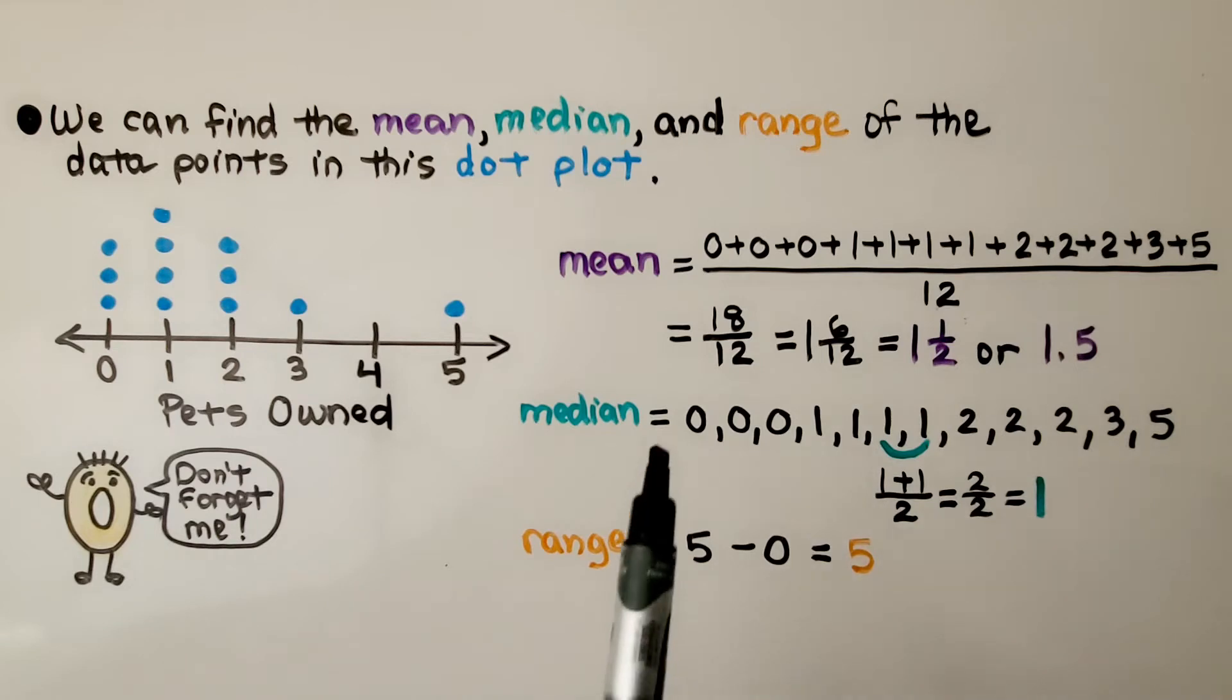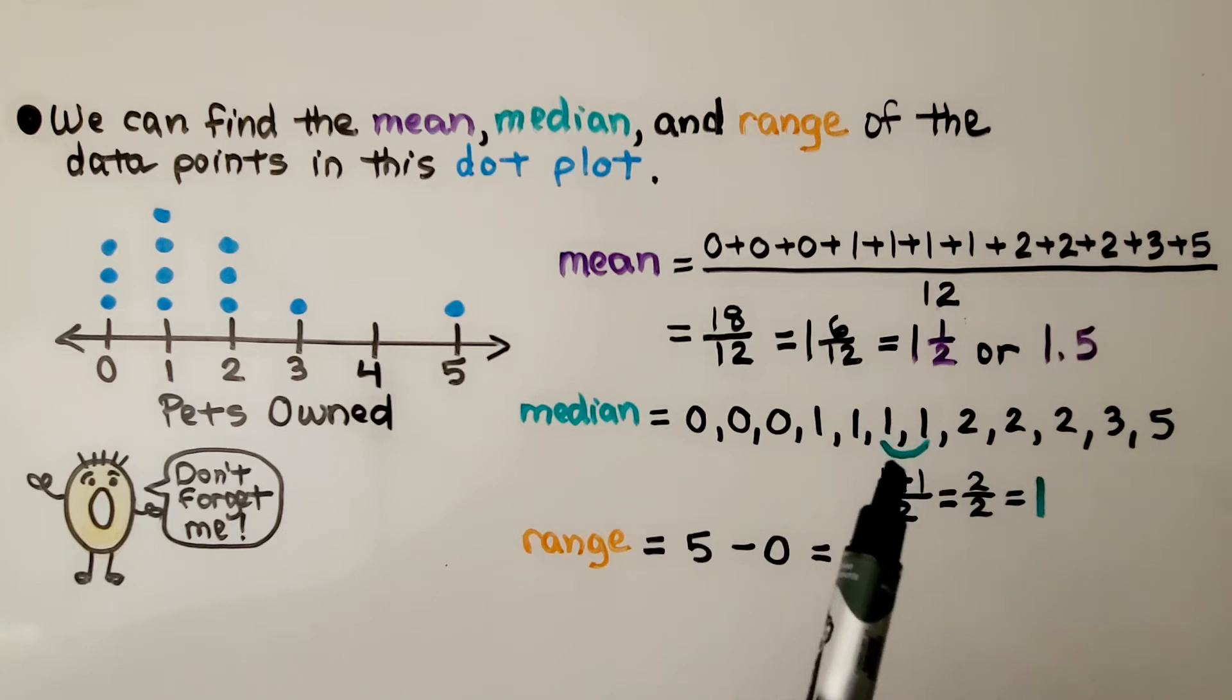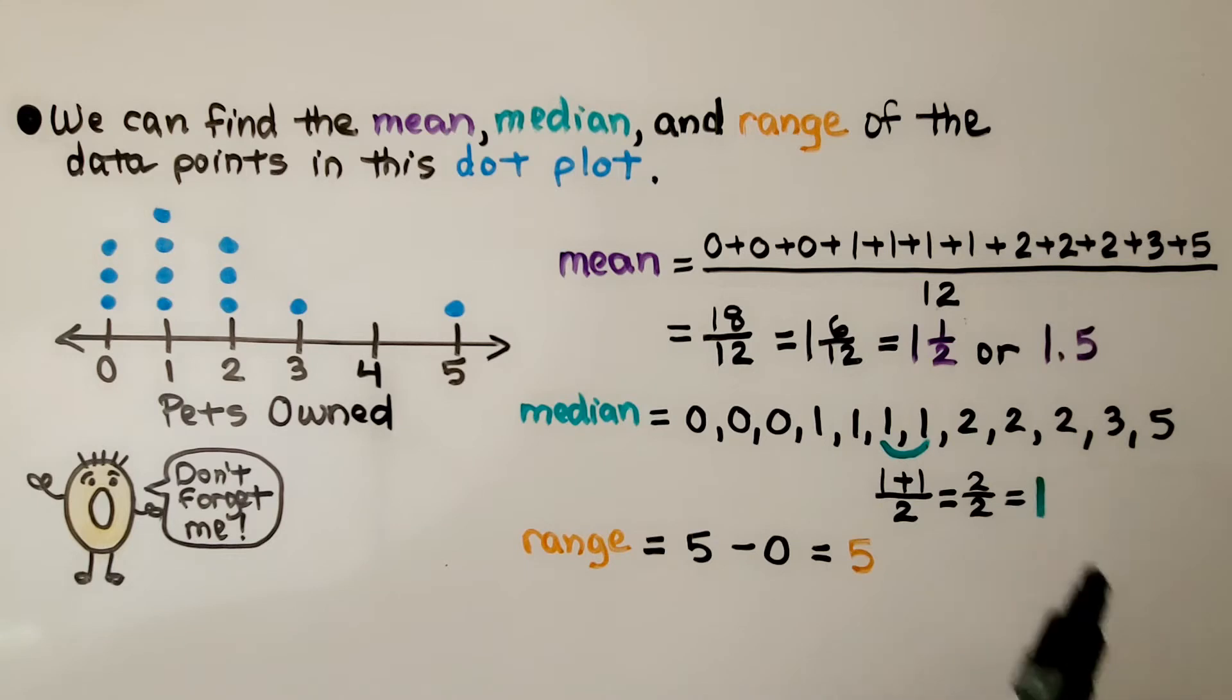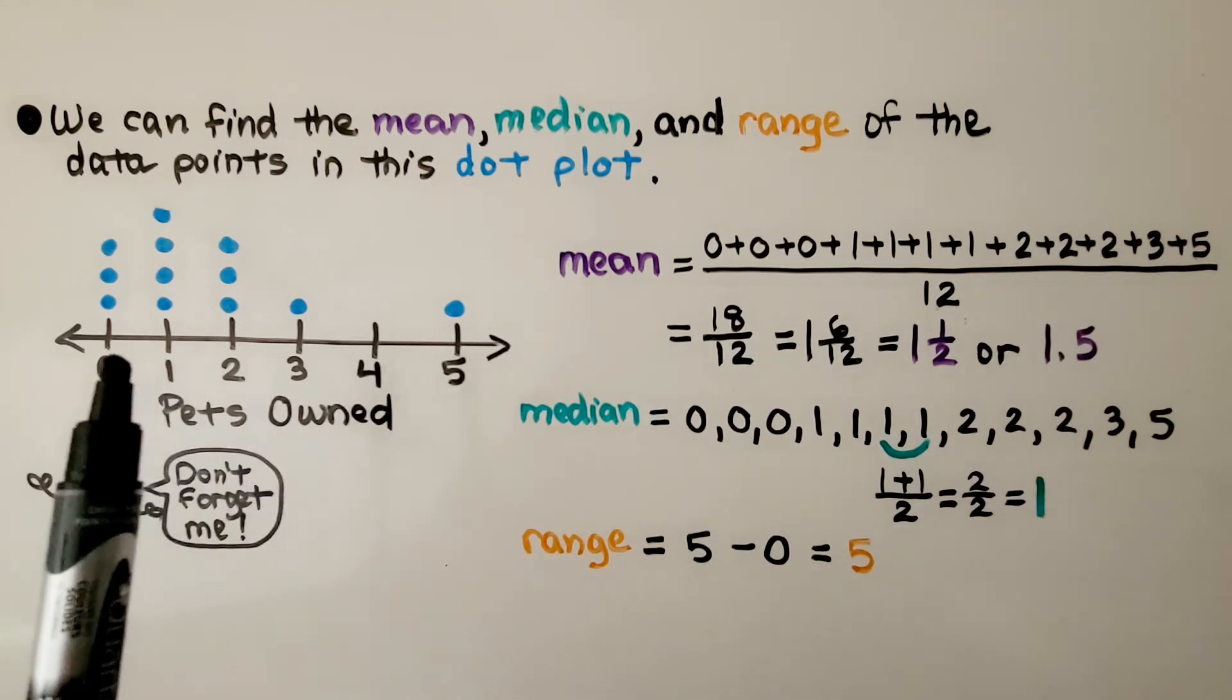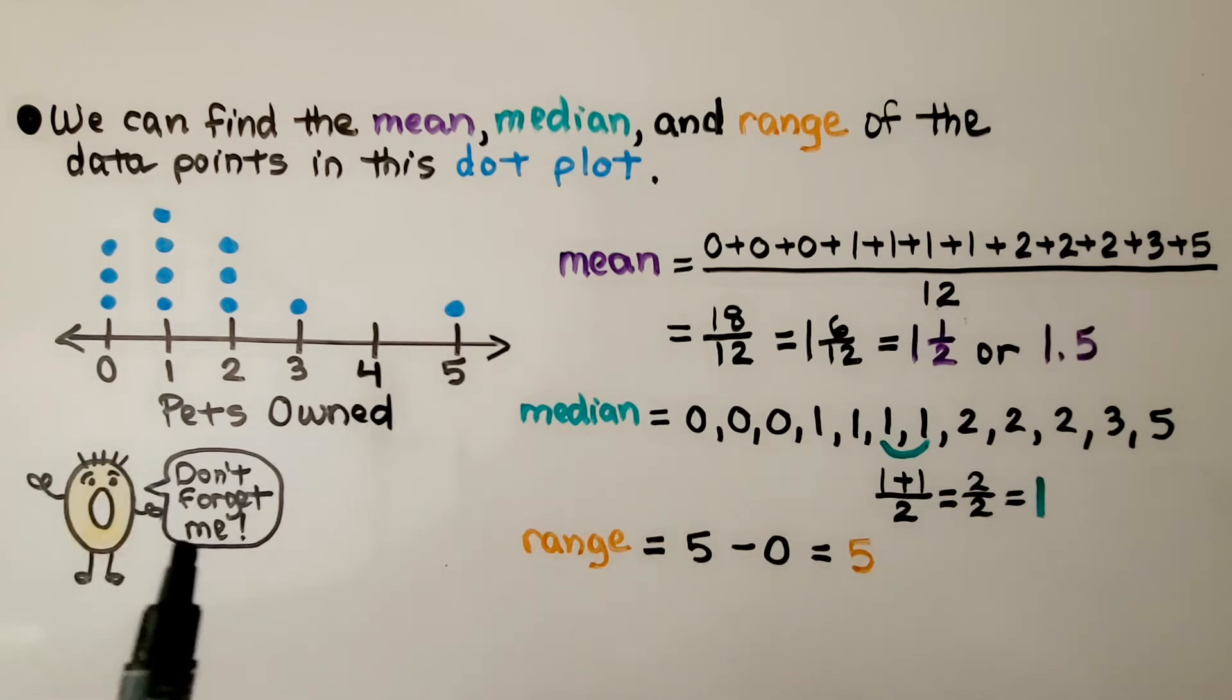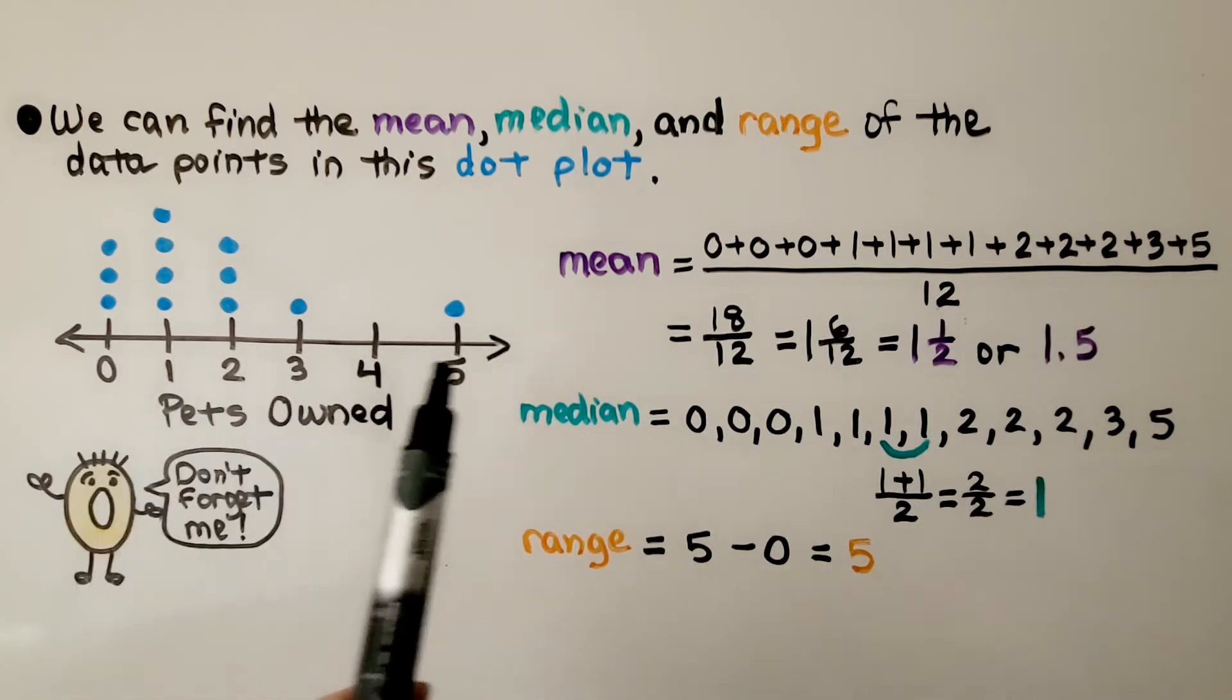For the median, we list them in order and find the middle number or middle numbers, then find the mean of those two numbers. We get a 1. For the range, we look at the greatest number, 5, and the least number, 0. We don't forget the 0. We subtract, and the range is 5.